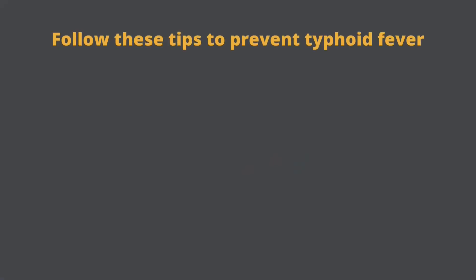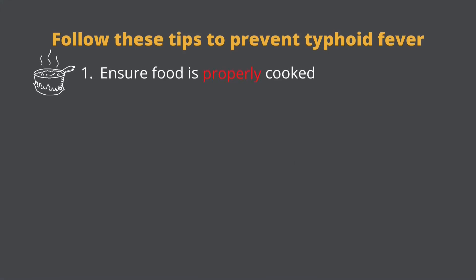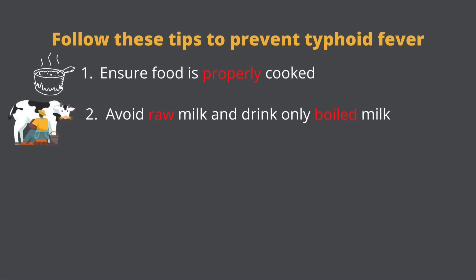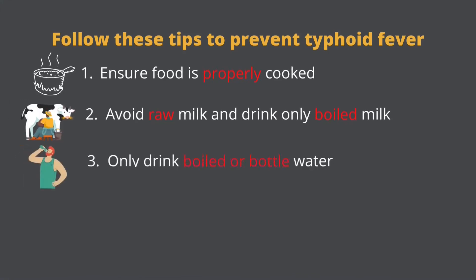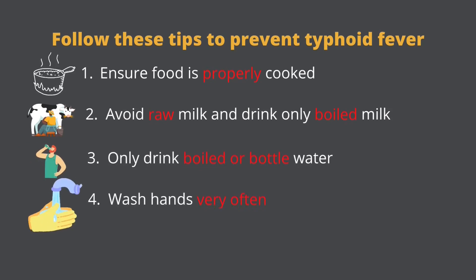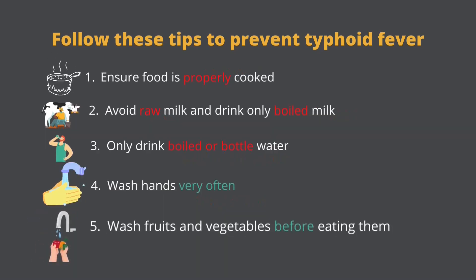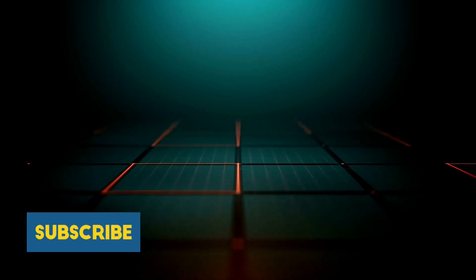Follow these tips to prevent typhoid: ensure food is properly cooked, avoid raw milk and drink only boiled milk, always drink boiled or bottled water when travelling, wash hands after using the washroom and after coming from outside, and wash fruits and vegetables before eating them.